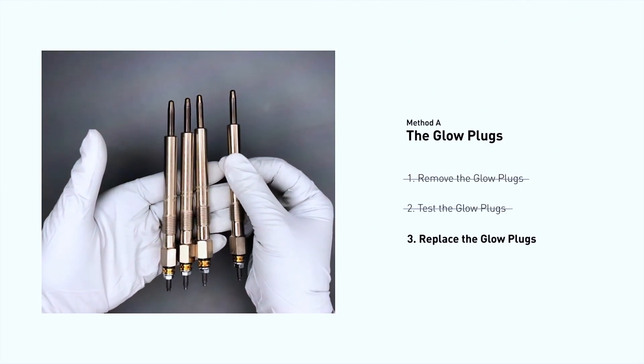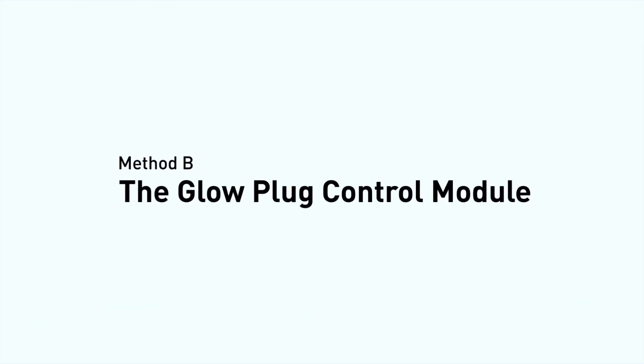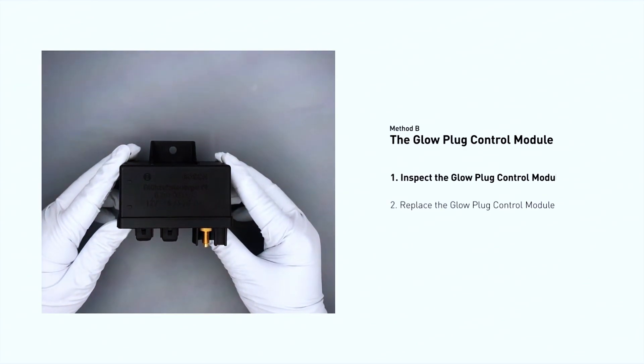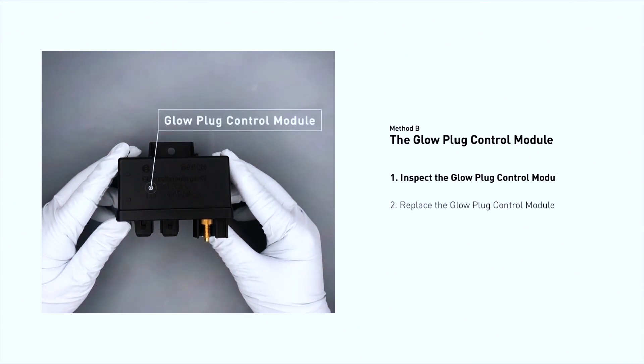Method B: The Glow Plug Control Module. The glow plug control module is located on the engine with a direct connection to the engine control unit. First, carefully remove the glow plug control module from the vehicle. Visually inspect the module to make sure it hasn't been contaminated by a leak from another engine component.